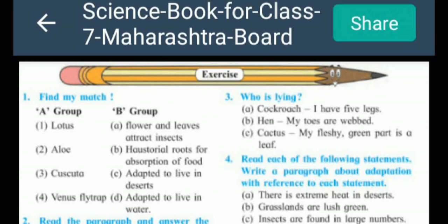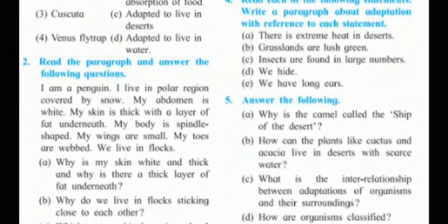Second, Aloe — the answer is C, 'adapted to live in desert.' Third, Cuscuta — the answer is B, 'haustorial roots for absorption of food.' Fourth, Venus flytrap — the answer is A, 'flowers and leaves attract insects.' Complete this match in your notebook in a nice way.